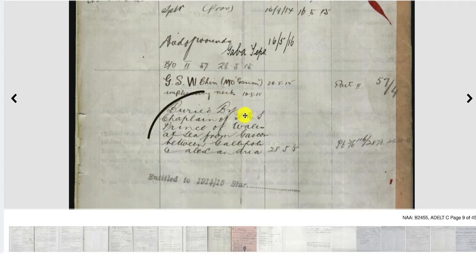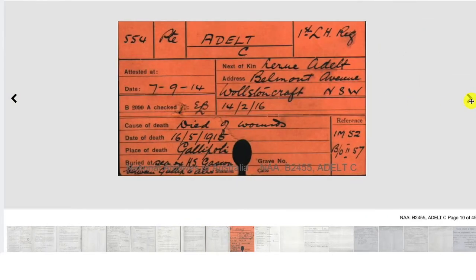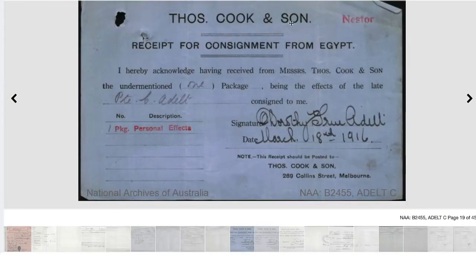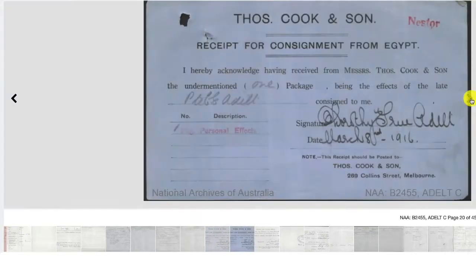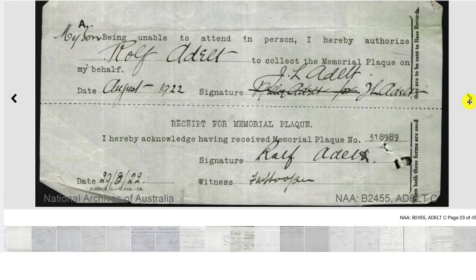It tells us that he was buried by a chaplain of the HMS Prince of Wales at sea. There are also some more records about Carl's death, as well as records about the consignment of his personal possessions back to his next of kin, including official forms such as the receipt of a Victory Medal to his father Lewis, and one for a memorial plaque as well.